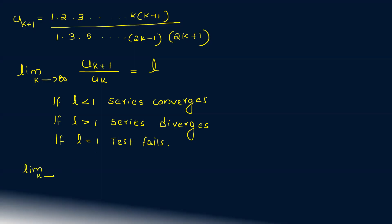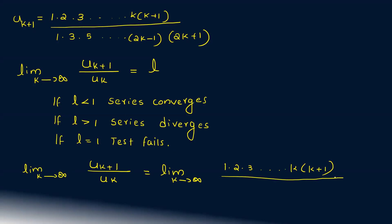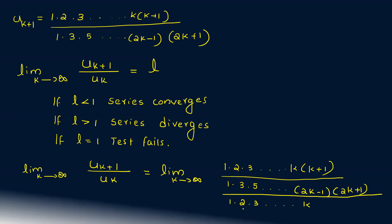So we compute L equals the limit as k tends to infinity of u_{k+1} by u_k. That is the limit as k tends to infinity of [1·2·3···k(k+1)] divided by [1·3·5···(2k−1)(2k+1)], times [1·3·5···(2k−1)] divided by [1·2·3···k]. This simplifies.